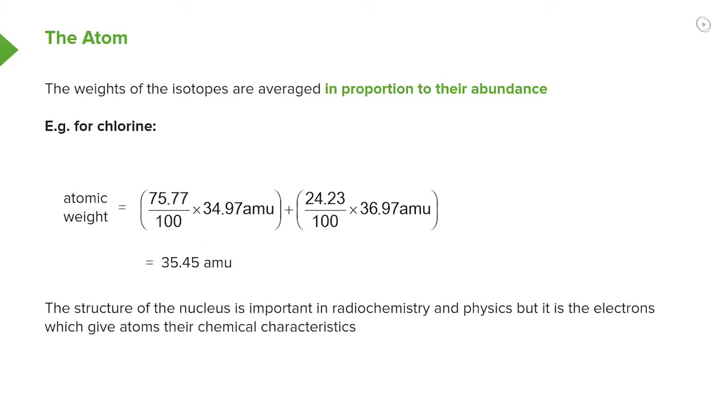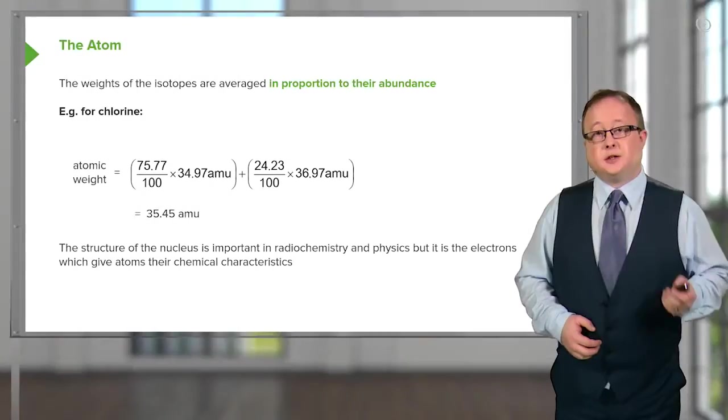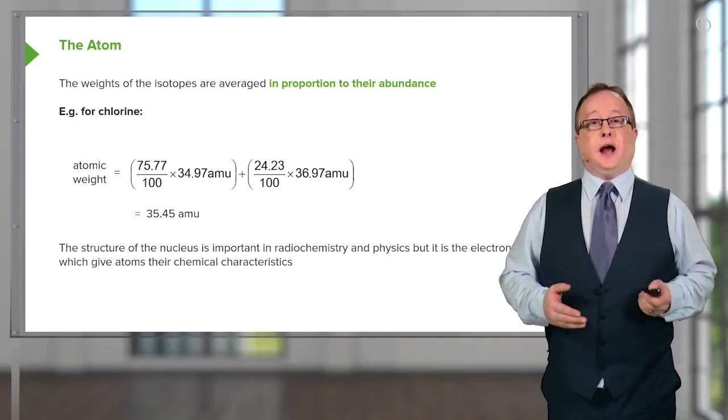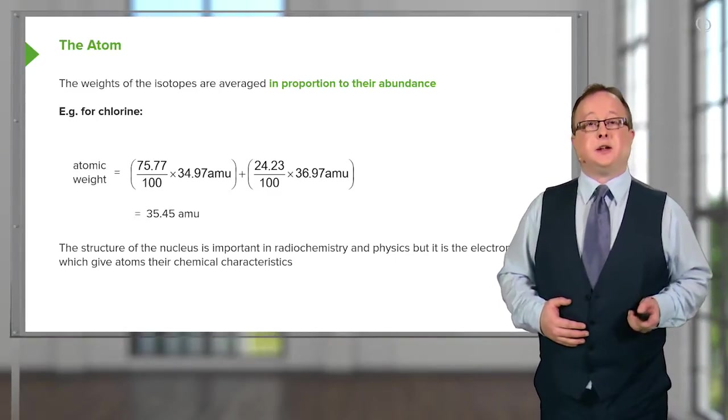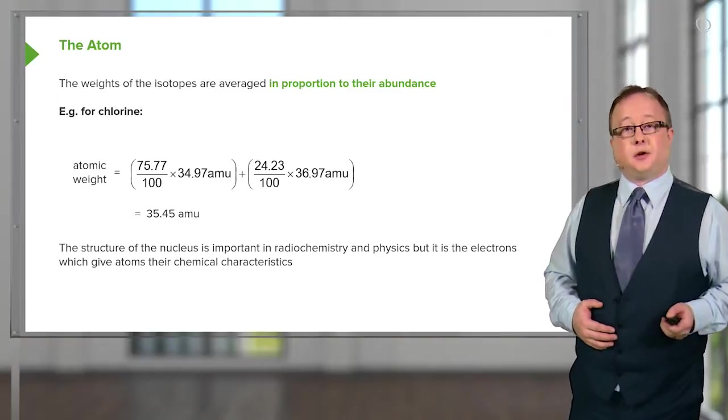75% of all chlorine atoms exist in their 35 atomic mass form, whereas approximately 25% exist as the 37 atomic mass form of chlorine. So what we need to do is we need to find a weighted average of those two isotopes to give us the relative atomic mass that you would see in the periodic table.